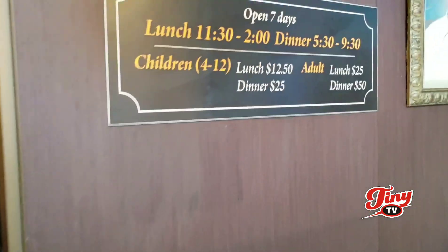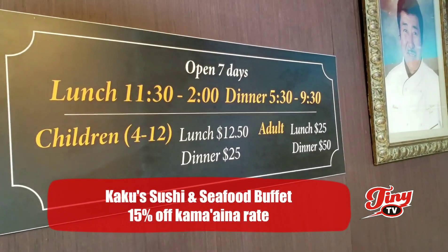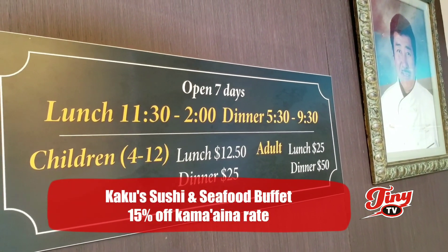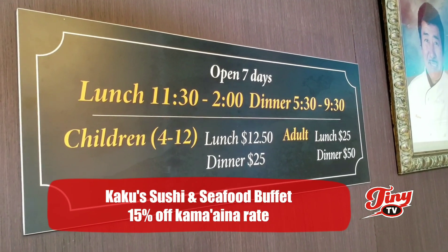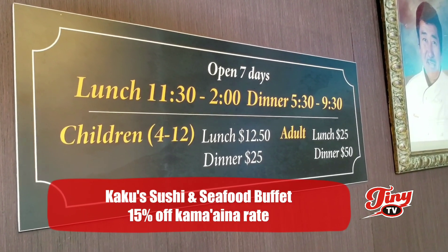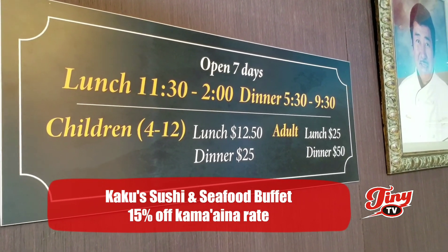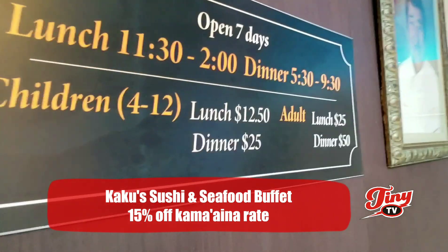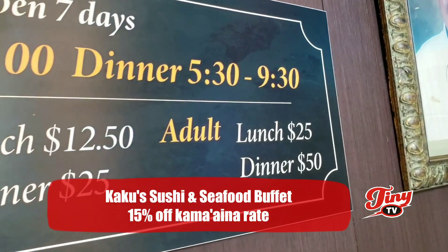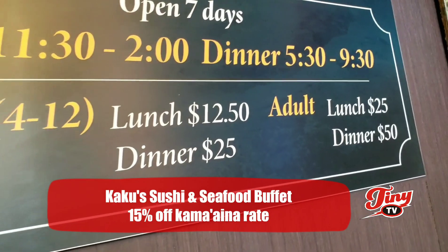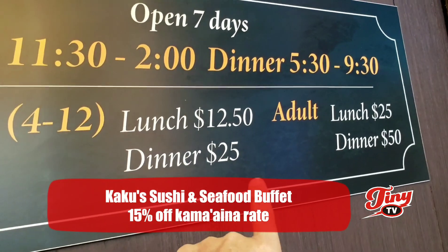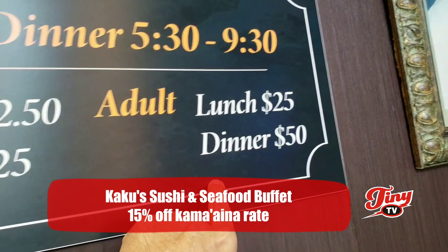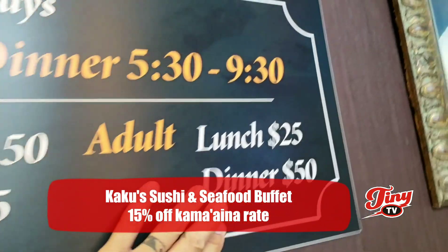Now look at the prices — very reasonable. At lunch, which is 11:30 to 2, for kids ages 4 to 12, it's only $12.50. This is all you can eat. Lunchtime for adults is $25.00, and then dinner time is a little bit higher — so double it: $25 for kids and $50 for adults. But it's all you can eat.